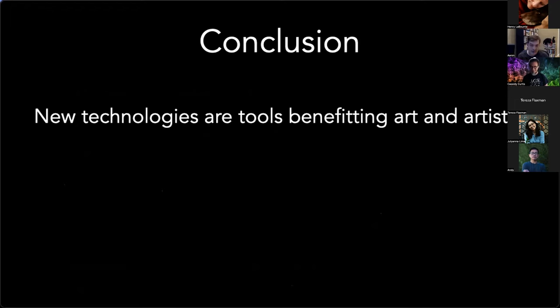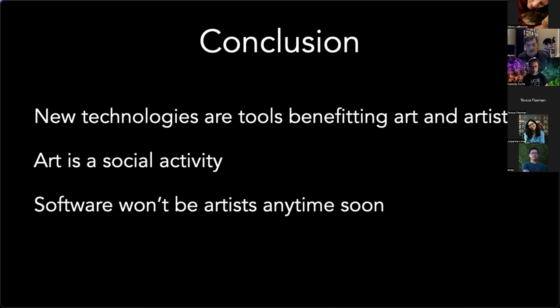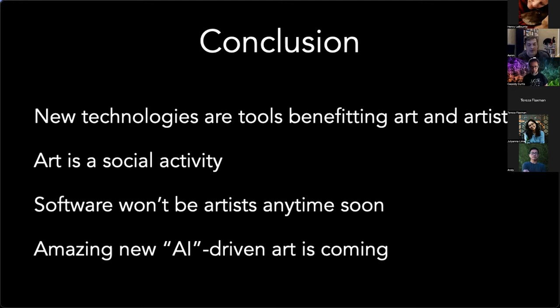To conclude: my main points are that new technologies are tools that benefit, broadly speaking, art and artists on net. I believe art is a social activity — something we do primarily for social reasons — and as a result I just don't see how software can be considered artists anytime soon. As long as people really understand what AI is, there's a lot of harm in saying AI is an artist because it gives people a false impression of what AI is. It's been so exciting over the past several years watching artists play with deep dream, GANs, VAEs, and all this stuff, and seeing every new bit of code go to GitHub and a bunch of AI artists play with it and do really cool stuff. It's just so fun to watch all of the new stuff coming out as a result of these new technologies. Thank you.